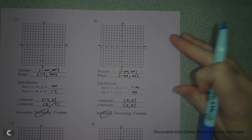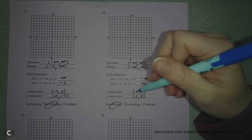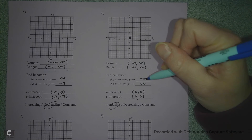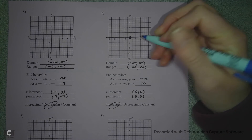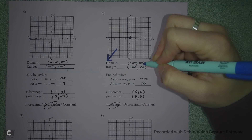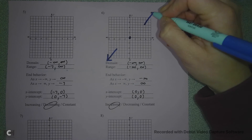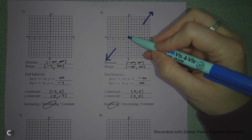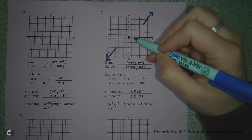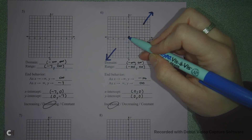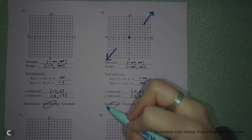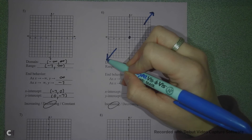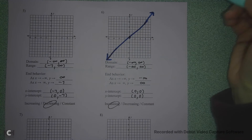Let's do number six. My y-intercept is at (0, 0). My end behavior on the left is negative infinity, and on the right it's positive infinity. It has to go through this point, so it can't cross elsewhere — it has to cross here. It looks like this is increasing. My domain and range are both negative infinity to infinity, so my picture just looks like that.